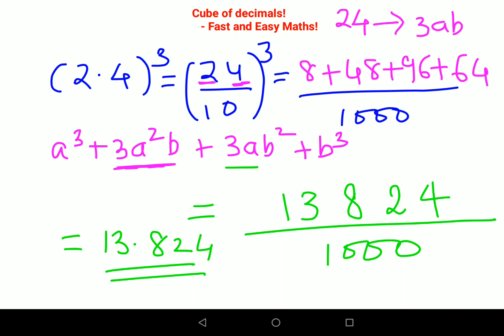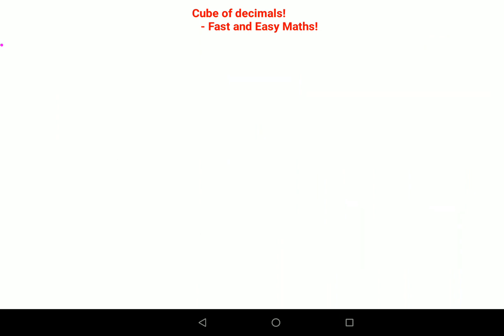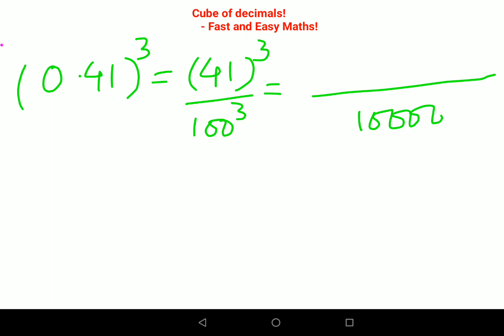Now let's do something different like 0.41, the whole cube. This now changes to 41 cube divided by 100 cube. So whatever answer you will get, you will divide by 1 and 6 zeros, basically you are dividing by 10 lakh or 1 million.